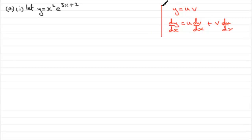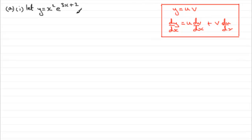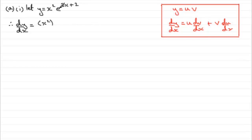Whenever I've got the product rule to do, I don't write out what u and v are because all you've got to do is take one of those functions of x, multiply it by the differential of the other function, and then do it the other way around. So, dy/dx — I'm going to go straight into this. I'm going to take x squared and multiply it with the differential of e to the 3x plus 2. To differentiate e to the 3x plus 2, you've got to use the chain rule.